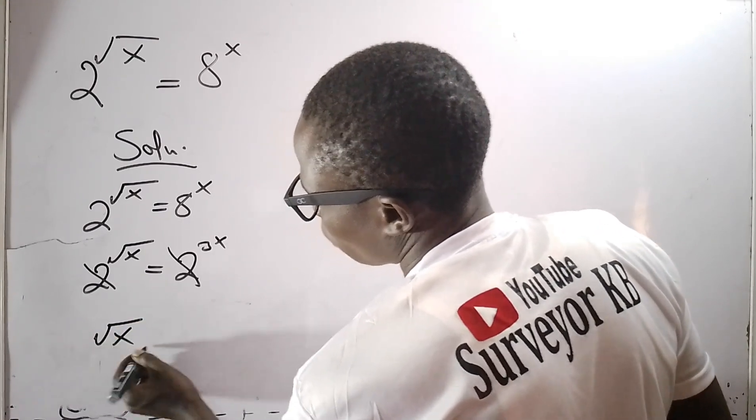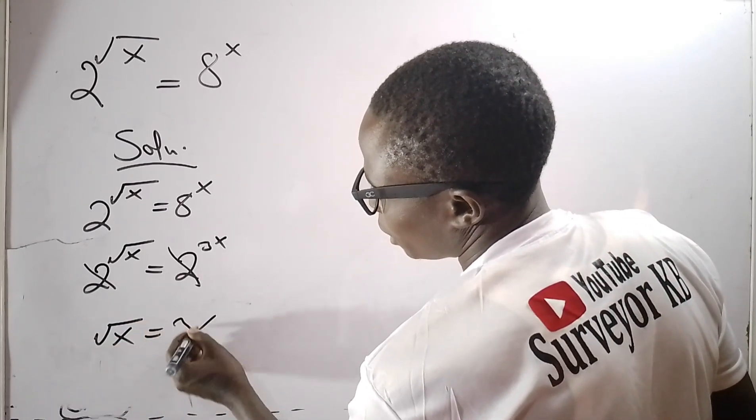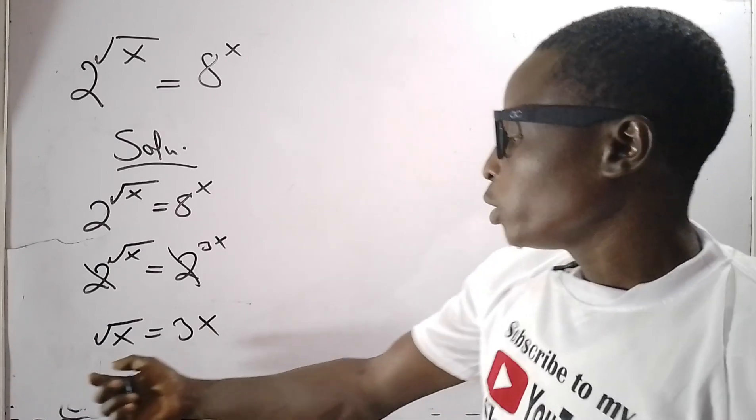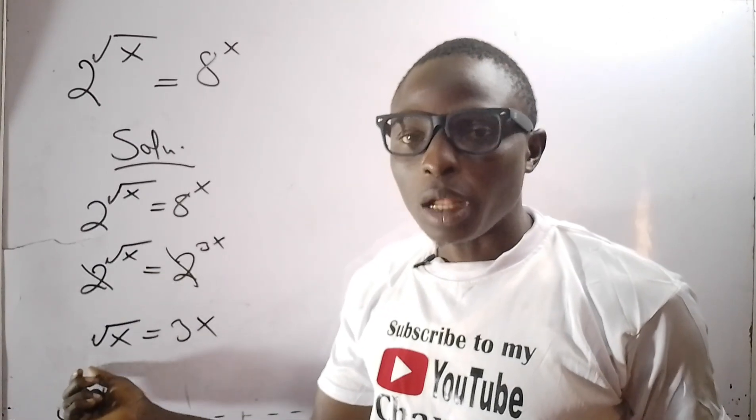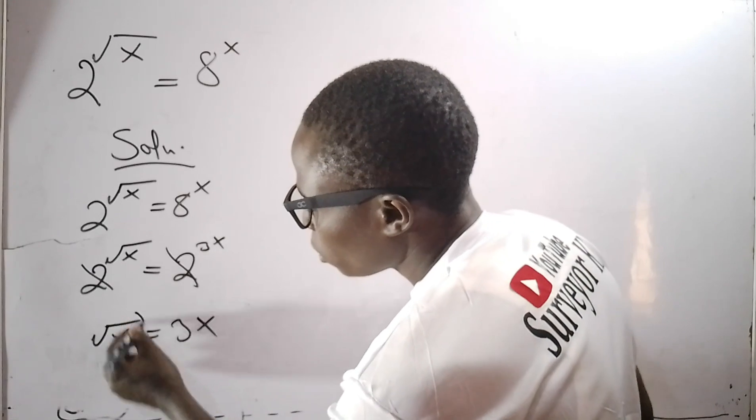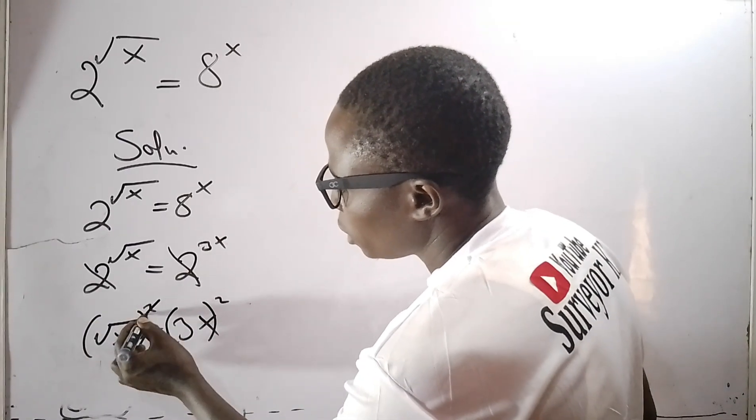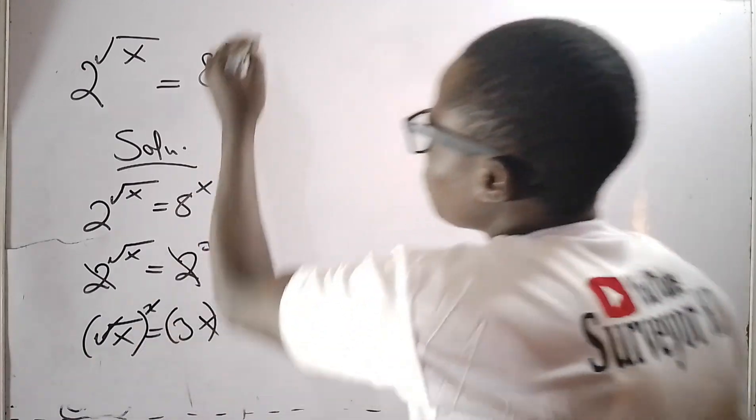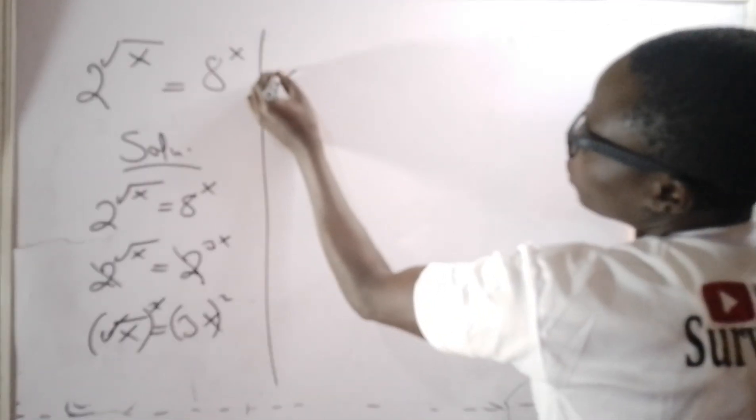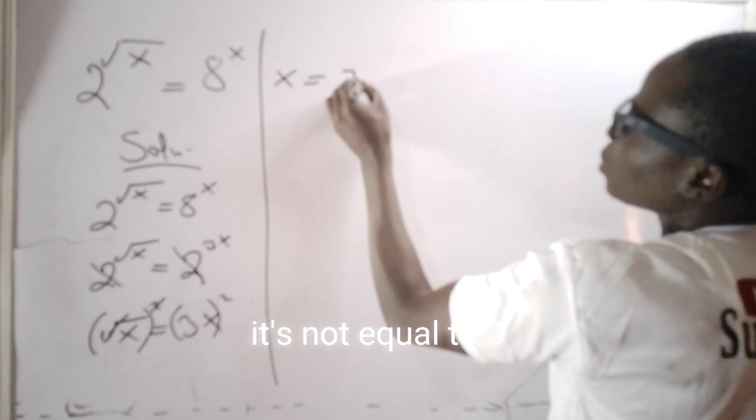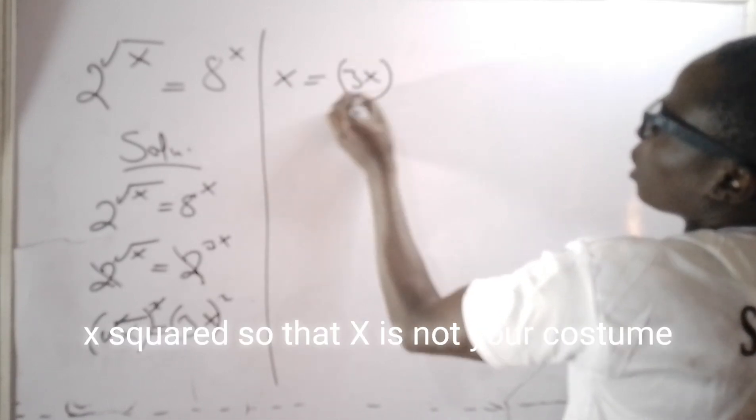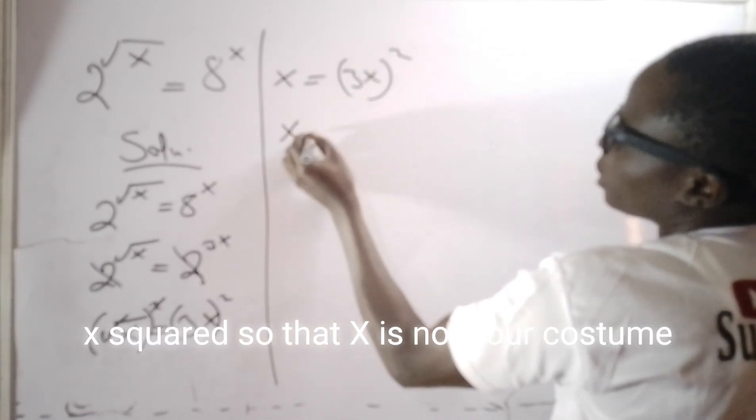So I want to get rid of this square root, that means I have to square both sides. So I will square here, I will also square here, so that this will go with this. So that I have x is equals to 3x squared.